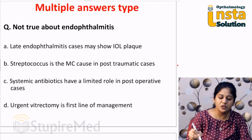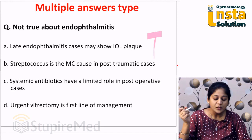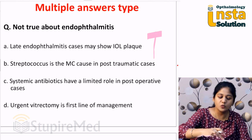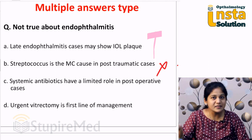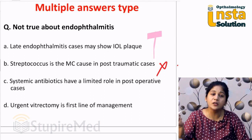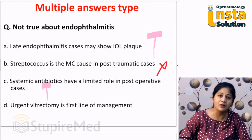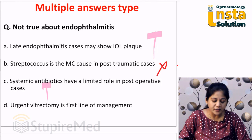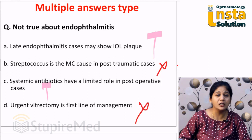Now let's solve the question. Late endophthalmitis cases may show a plaque — correct. Streptococcus is the most common cause in post-traumatic cases — no, it is Bacillus cereus. Systemic antibiotics have a limited role in post-operative cases — yes, that is a correct statement. Urgent vitrectomy is the first line of treatment — no, the first line is intravitreal antibiotics, not vitrectomy.